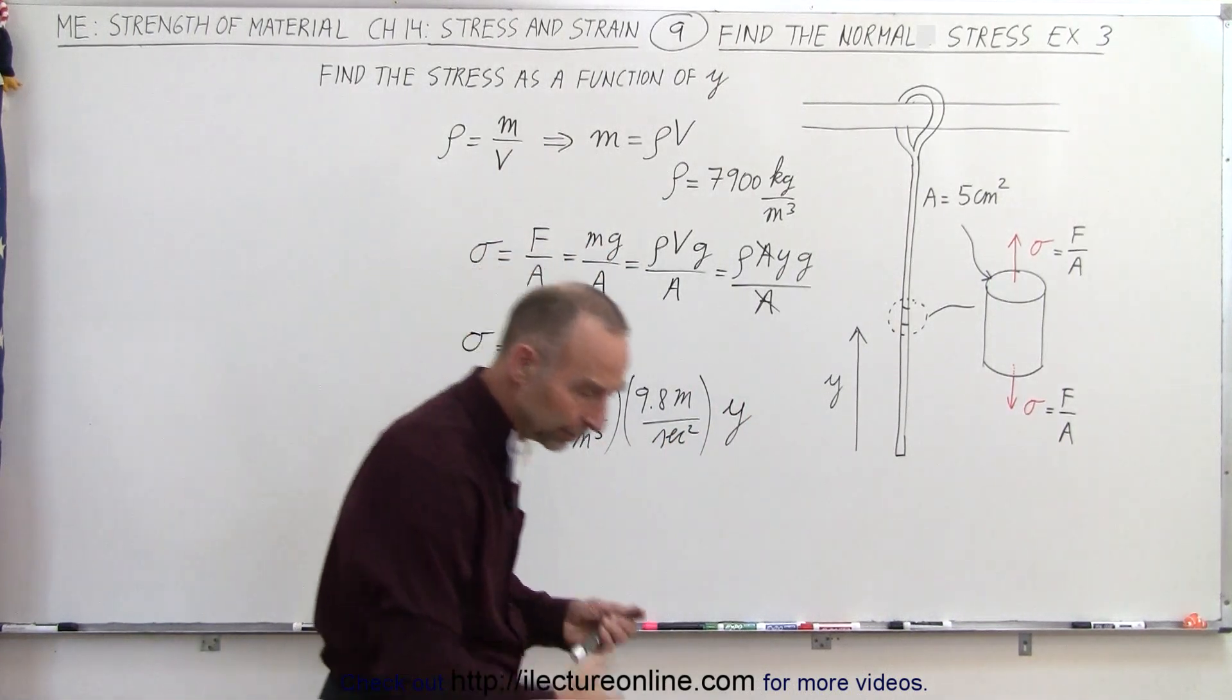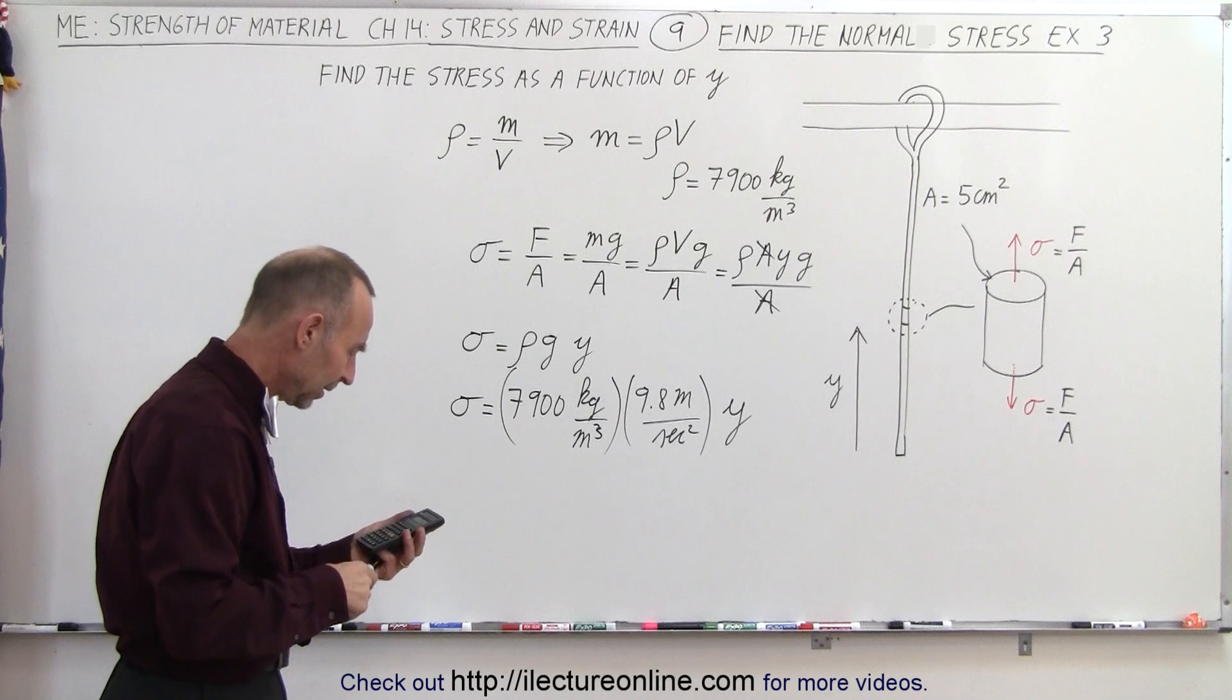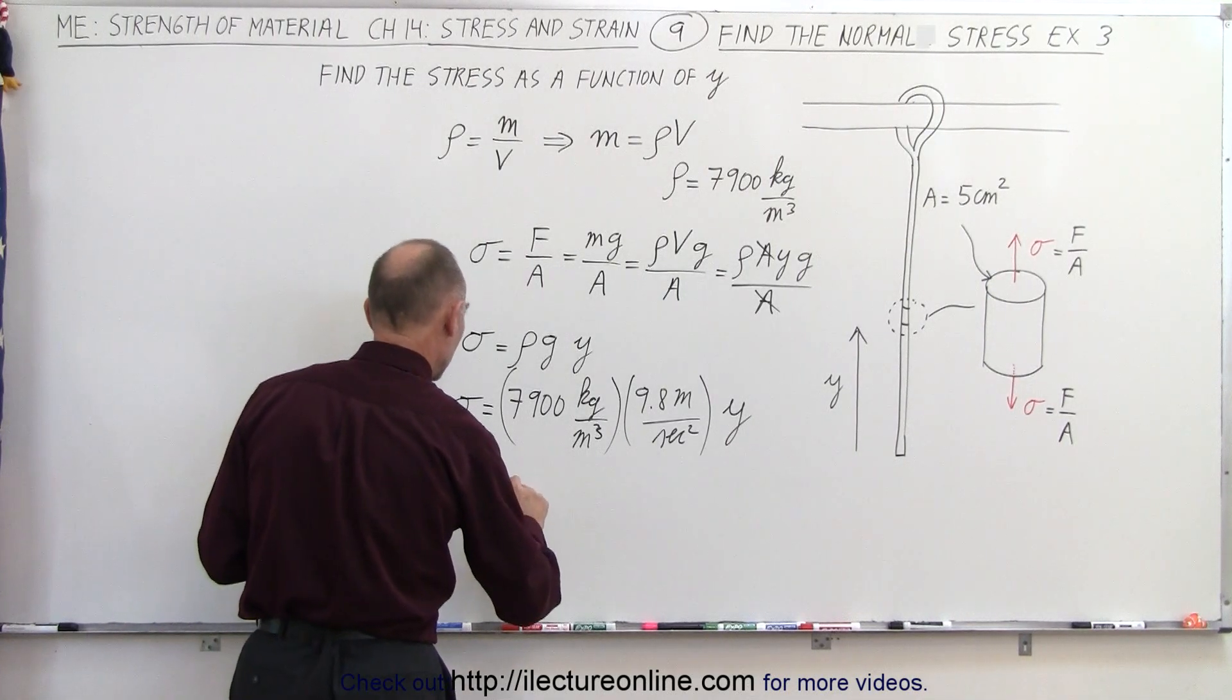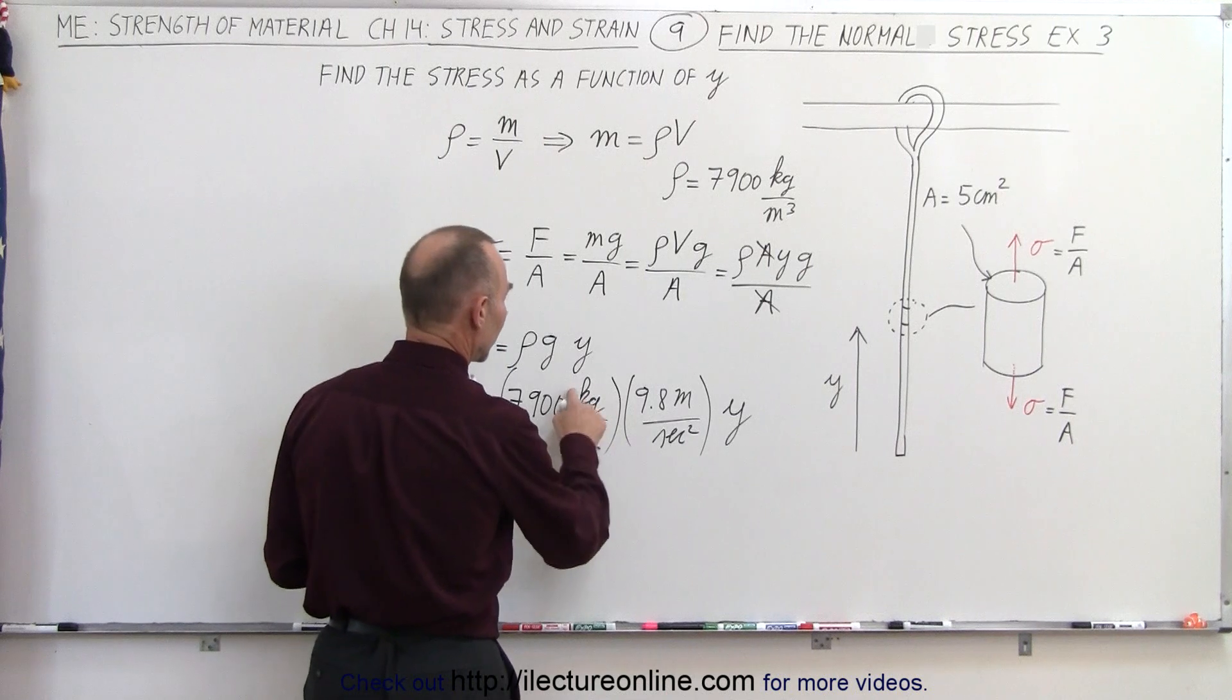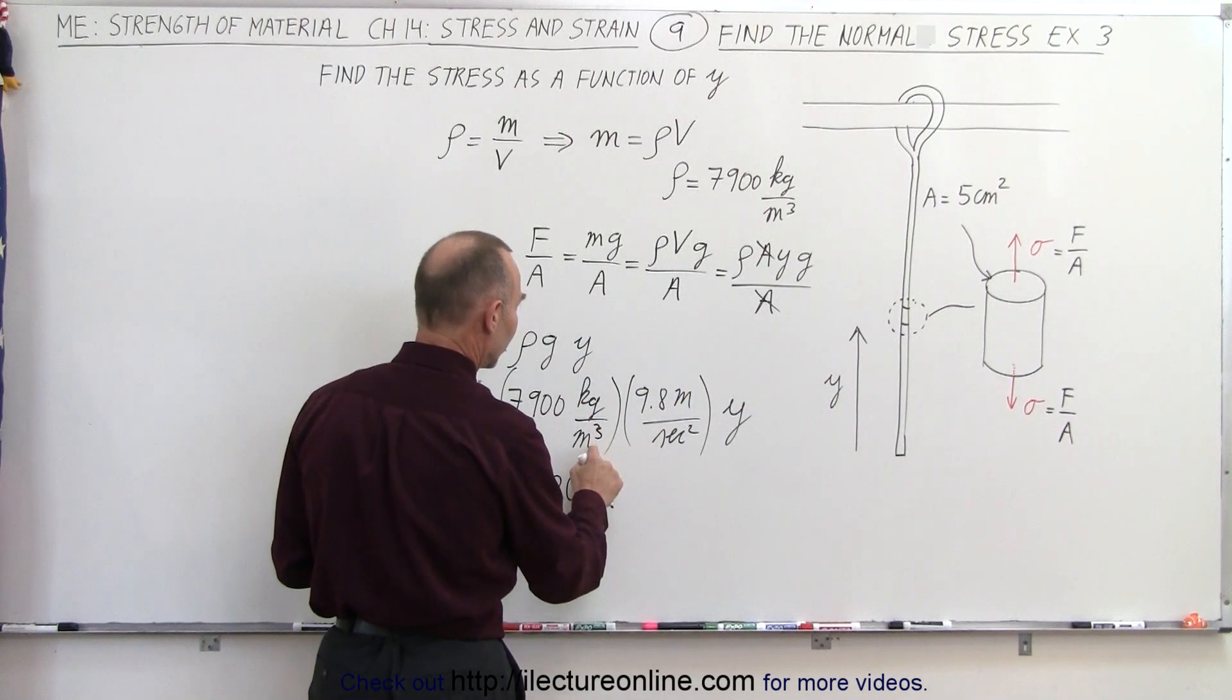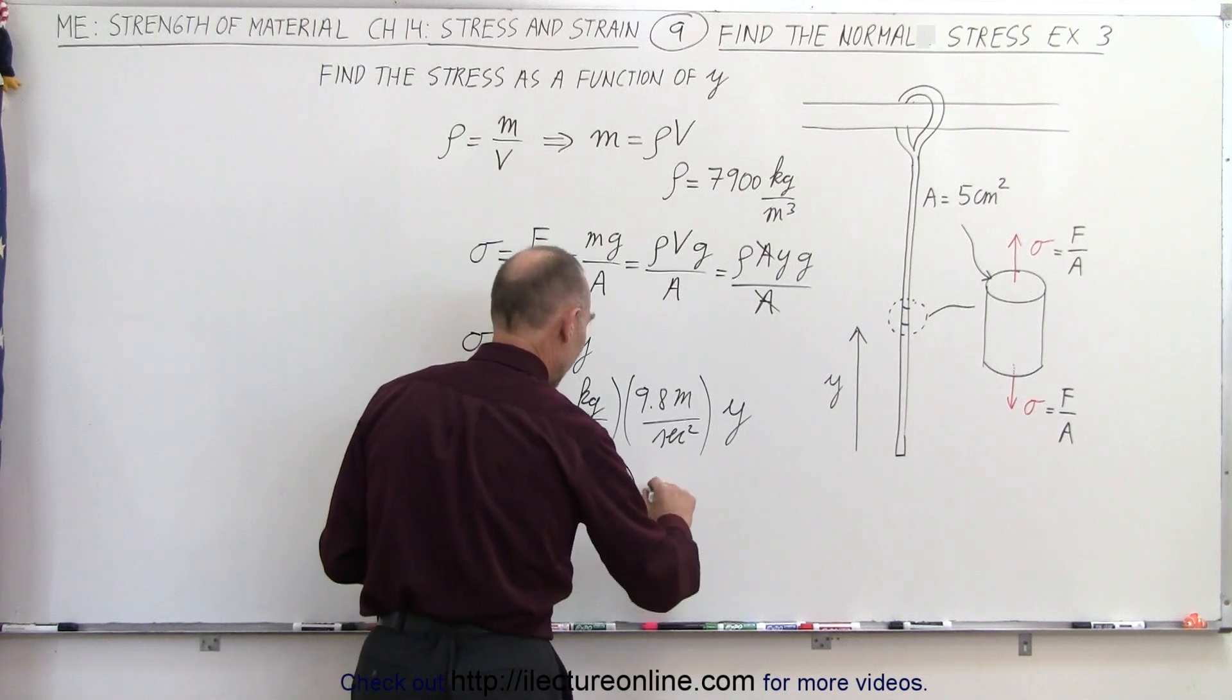If we multiply that out, 7,900 times 9.8 gives us 77,420. So σ equals 77,420. Now kilogram-meter per second squared is newtons, and we divide by meters cubed, so we have newtons per meters cubed times y.